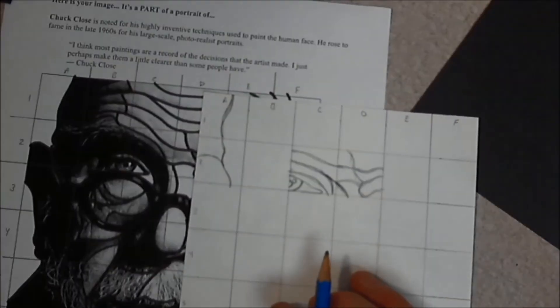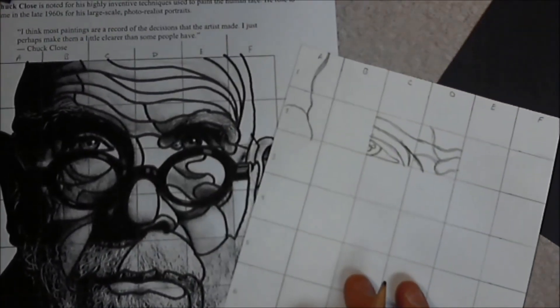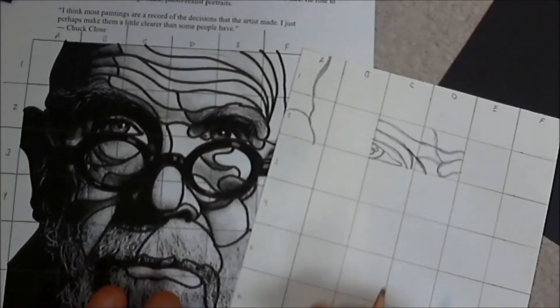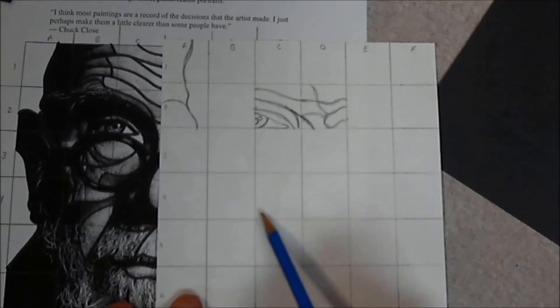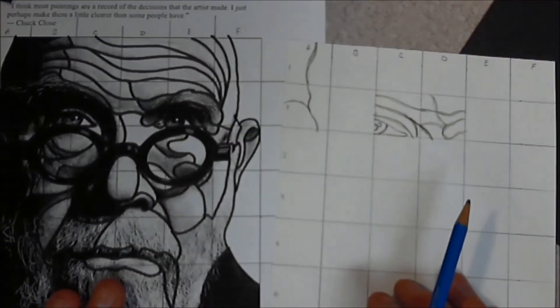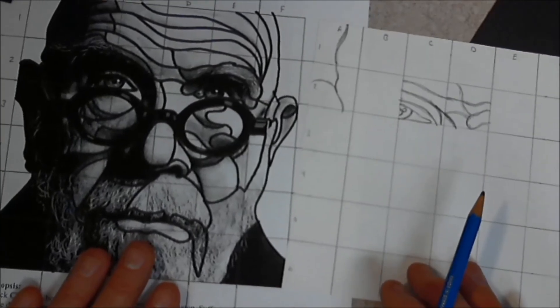At the very least, the goal for this video was to help you figure out how to one, draw the grid over your photograph, and two, draw the grid onto your blank piece of paper, and then see to start to transfer it up from one to the other.